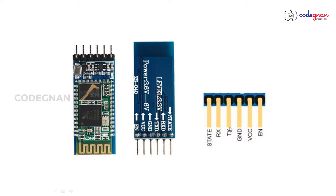It contains a TX pin which helps transmit data in serial format, and RX means receive serial data — so when we send data to the Bluetooth module it is received as serial. The State pin helps us use it as feedback to check whether the module is working or not in real time.